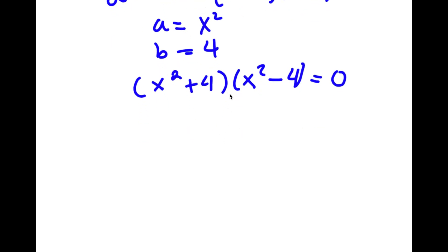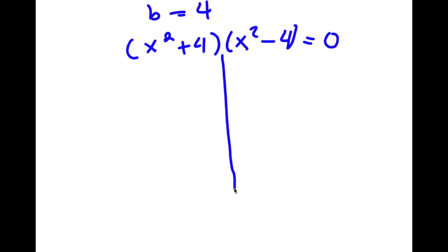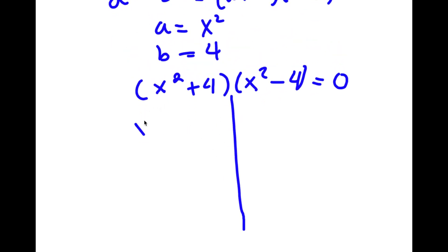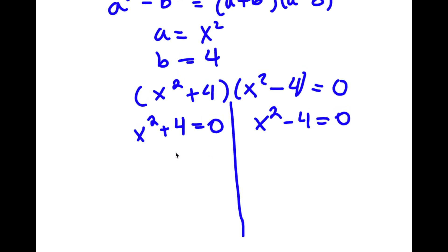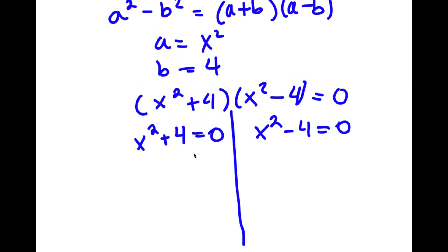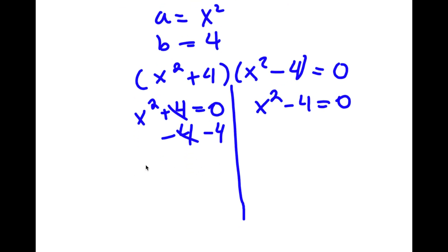Now this is going to give me two equations. I have x squared plus 4 is equal to 0, and I have x squared minus 4 is equal to 0. For x squared plus 4 equals 0, I can subtract 4 on both sides, and I have x squared is equal to negative 4.